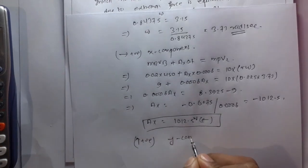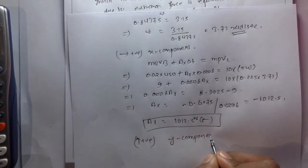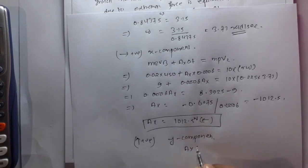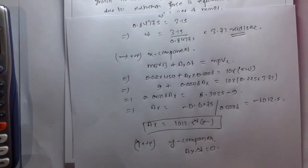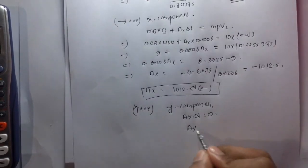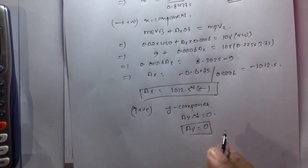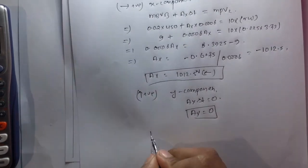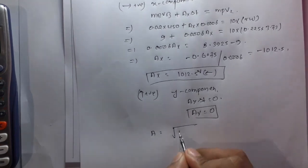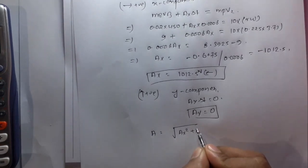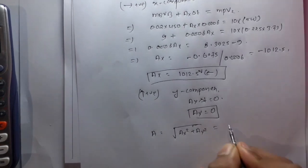Also taking the positive y component: Ay times delta t is equal to zero, so Ay is equal to zero. Now the impulsive reaction is given by the square root of Ax squared plus Ay squared, which is equal to 1012.5 Newtons, which is our requirement.